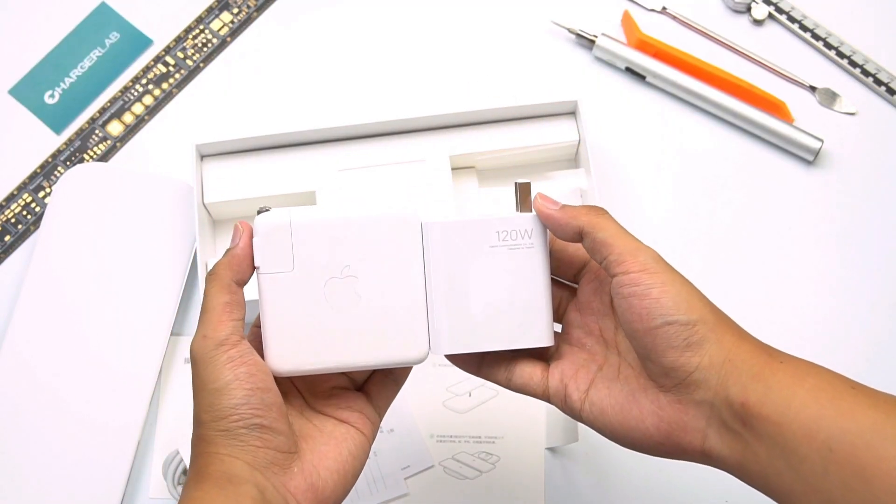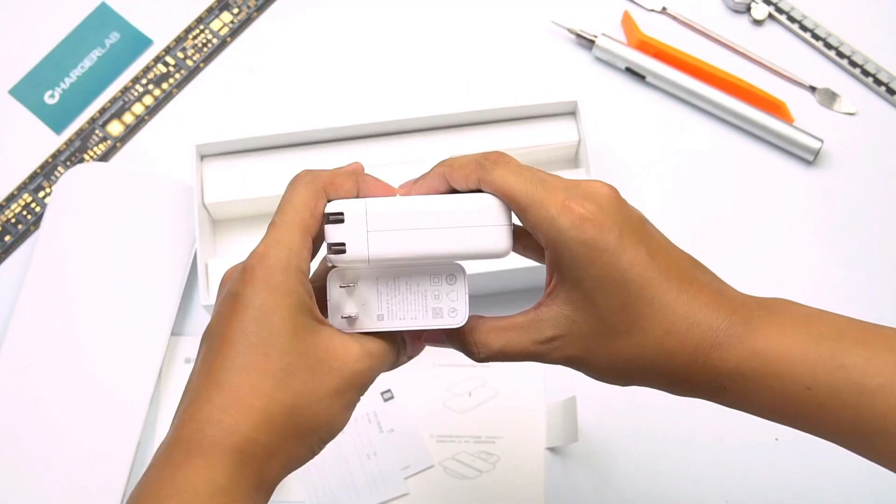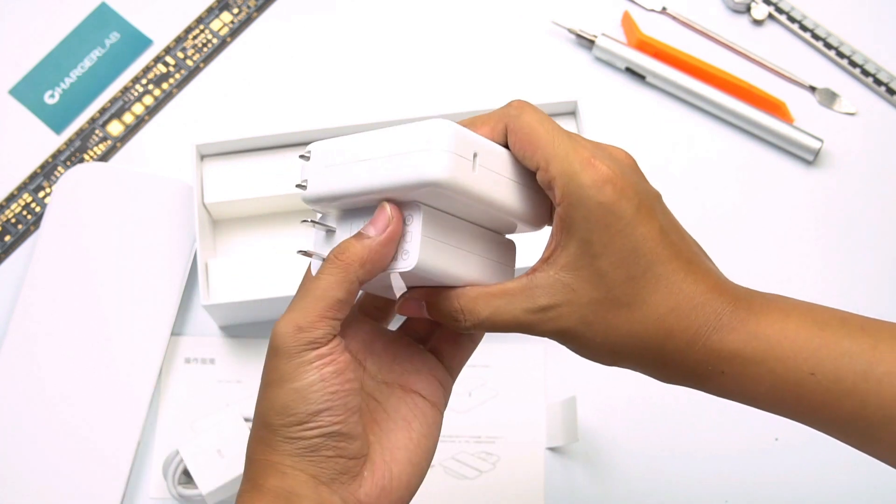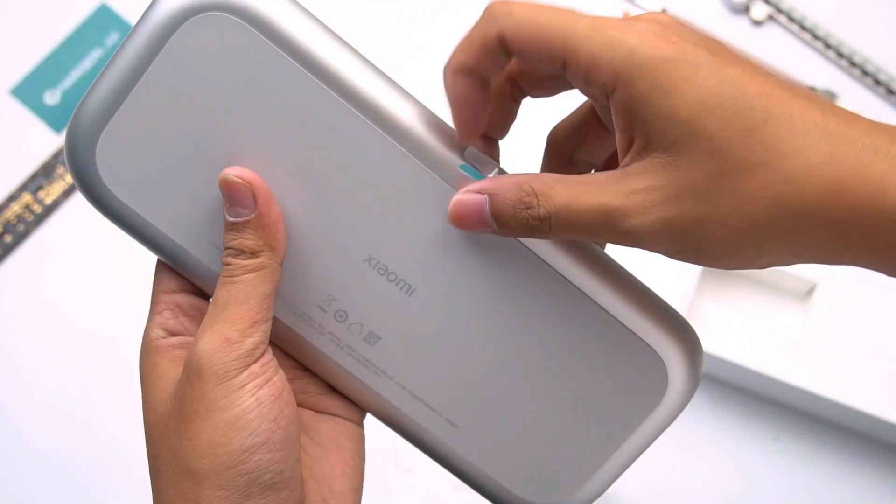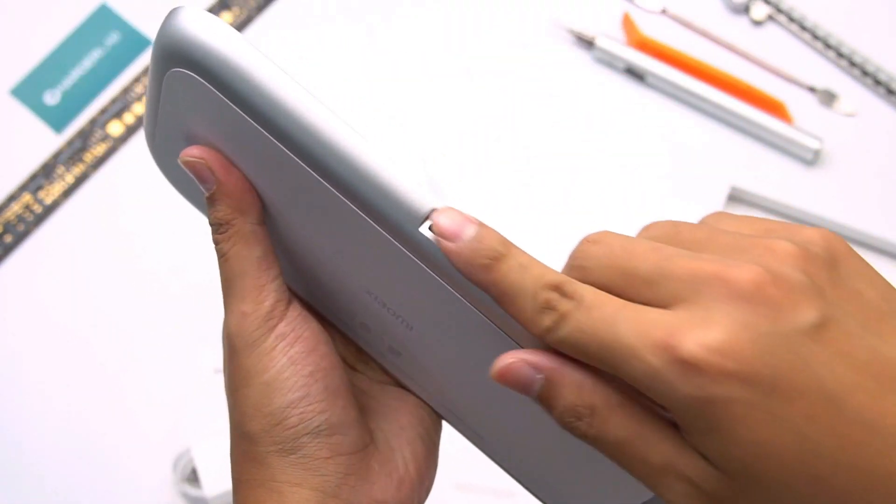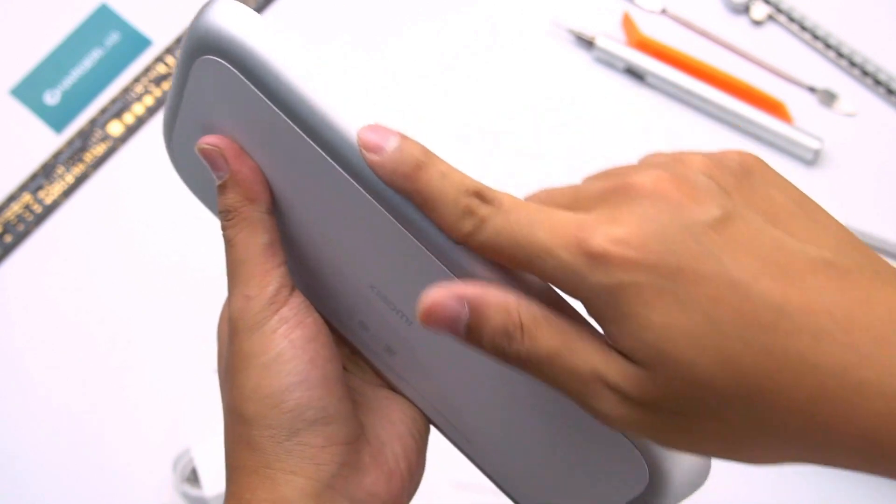Apple 96W charger is close to 100W. But you can see the huge size difference between them. Tear off the sticker on the USB-C port. The silver part of the frame should be metal, but we'll see it later.